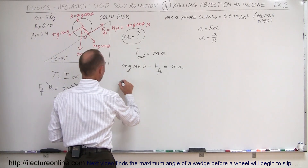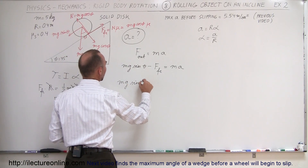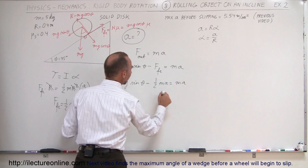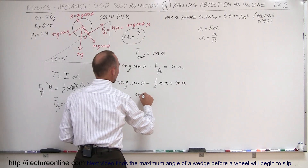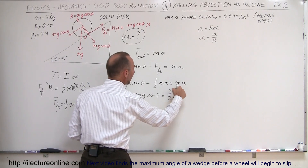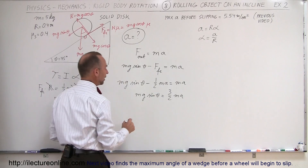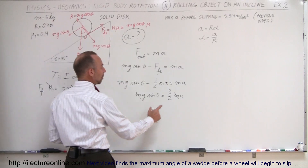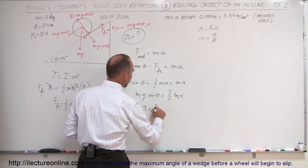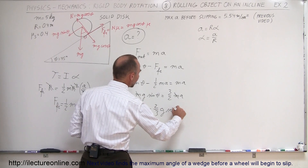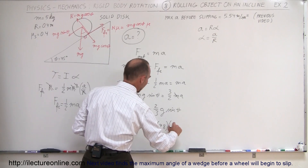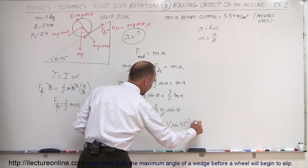We substitute the friction force into the net force equation: mg sine θ minus ½mA equals mA. Moving the ½mA to the other side gives mg sine θ = (3/2)mA. The mass cancels out, and multiplying both sides by 2/3 gives us A = (2/3)g sine θ.